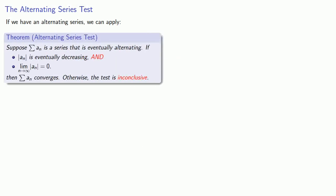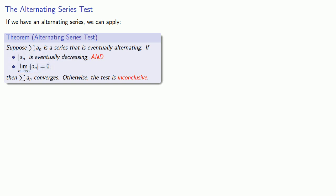If we have an alternating series we can apply the alternating series test. Suppose we have a series that is eventually alternating. If the absolute value of a_n is eventually decreasing and the limit as n goes to infinity of these absolute values is zero, then our series converges. Otherwise the test is inconclusive.